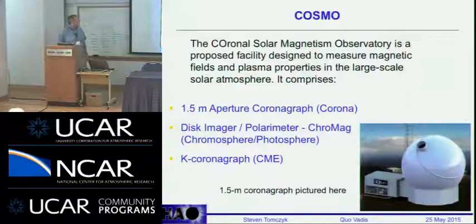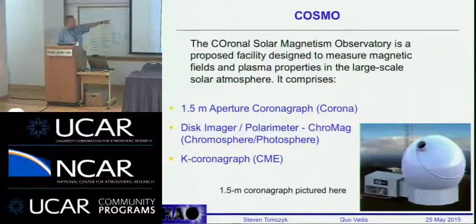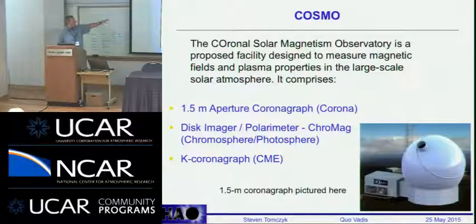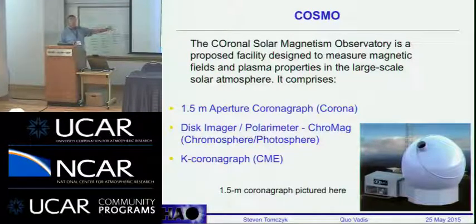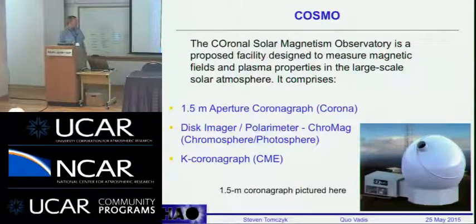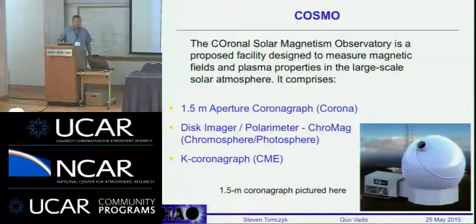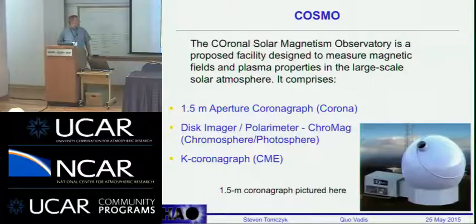This brings me to COSMO — our project to attack this problem, which is a real systems problem. We have a suite of instruments. The largest is the large coronagraph — a 1.5-meter aperture coronagraph — that is attacking the magnetic fields in the corona. There's also Chromag, which looks at magnetic fields in the chromosphere, and the K-coronagraph, already operating at Mauna Loa, which looks at the white-light corona and CMEs with fast time cadence. Mostly I'll talk about the 1.5-meter, which is the workhorse of the coronal magnetism problem.